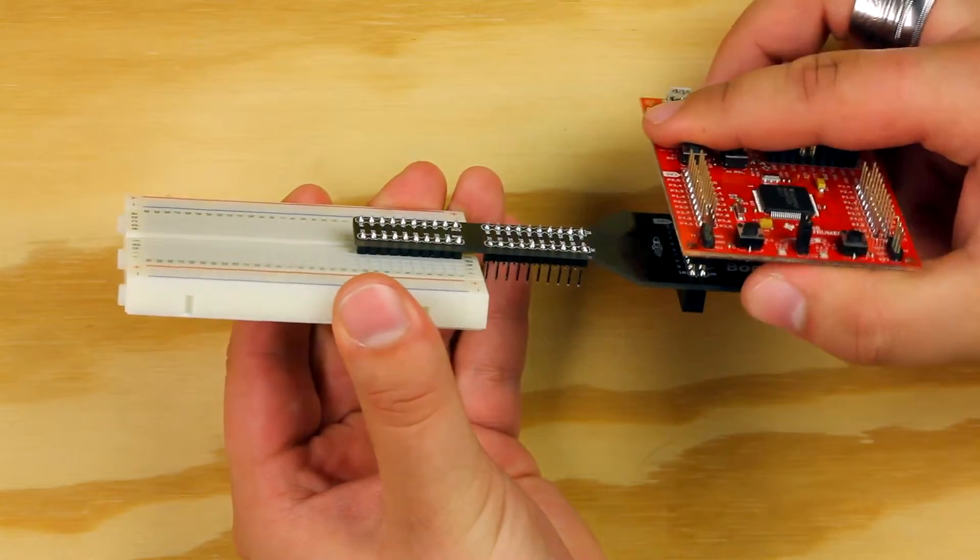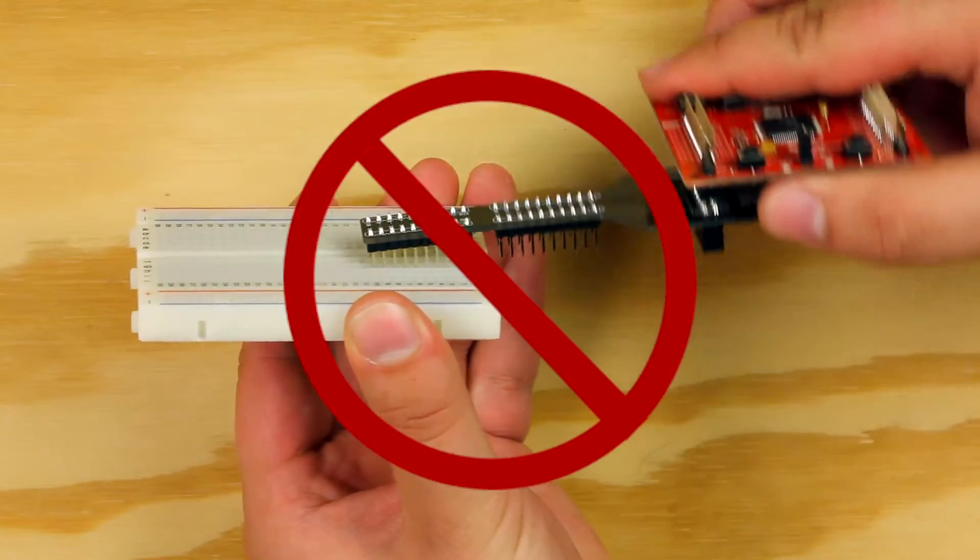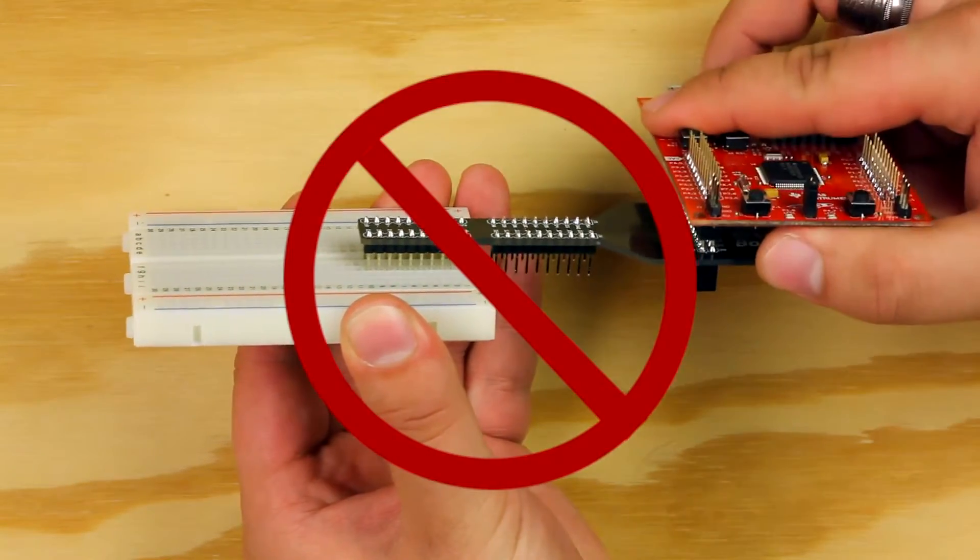If you need to remove the booster pack from the breadboard, use a rocking motion to easily free it. Do not pull directly on the booster pack or you may damage it.